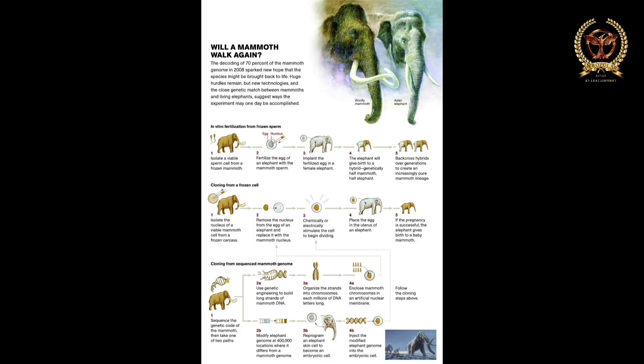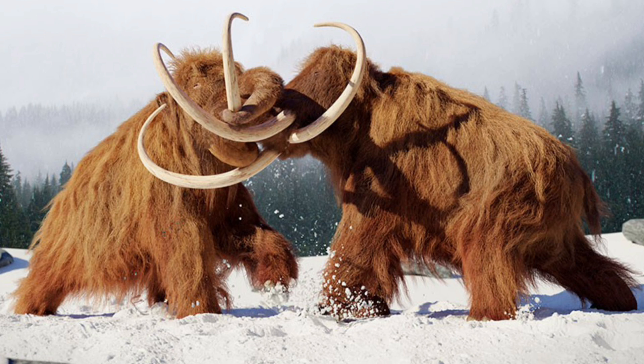Now let us look at the key differences between mammoths and elephants. Mammoths are heavier than elephants and have very long tusks — more twisted than ivory and can grow up to 16 feet long, while the longest elephant ivory is 11 feet and 7 inches. Only Asian elephants have no tusks in females, while mammoths and African elephants both have two tusks. Both African elephants and mammoths have two extensions from the ends of their trunks used for grasping, while Asian elephants have only one.